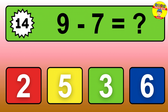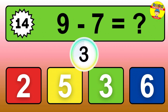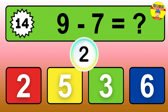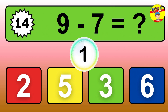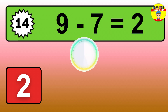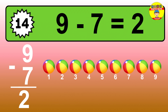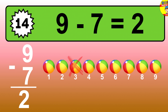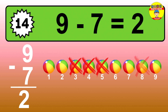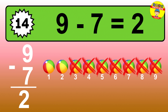Question fourteen: nine minus seven equals what? So the answer is, nine minus seven is two. Let's count it. One, two.